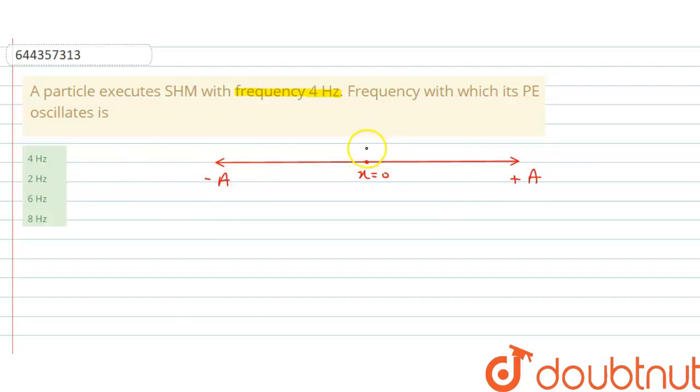A particle starts SHM from equilibrium position moving towards positive extreme position. It will go to the positive extreme position, then return back to its mean position, but this is not one oscillation, this is half oscillation. Now it will go to the negative extreme position and then it will come back. This is called one oscillation.